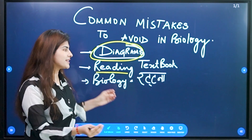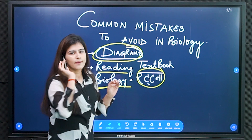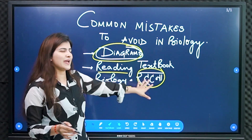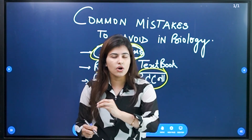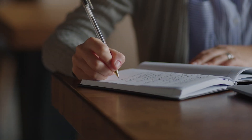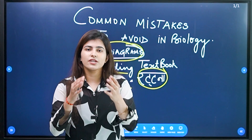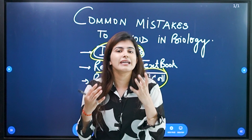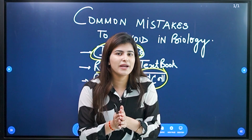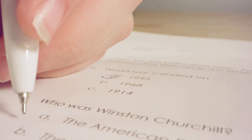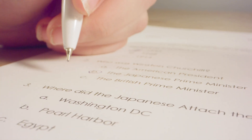Another mistake is thinking that biology equals rote learning. Biology doesn't mean you just rote-learn everything. You need to make notes, understand things, and build concepts. Then you will be able to attempt a good level of paper, because as you have seen in my videos, there are a lot of variations and tricky questions.